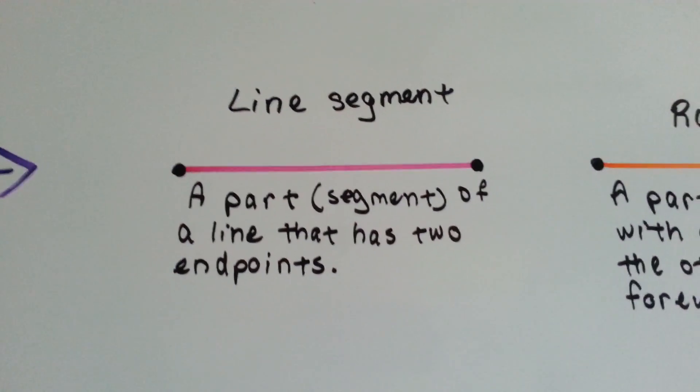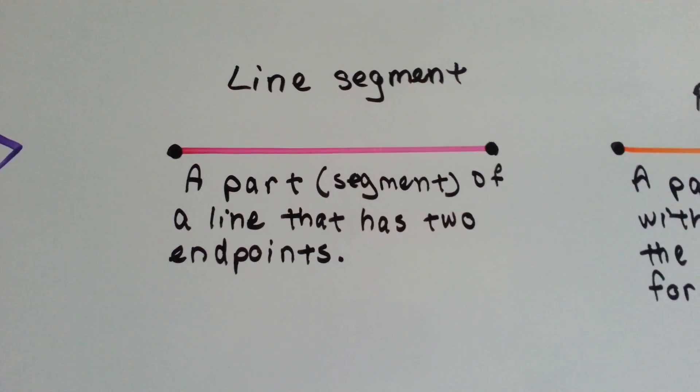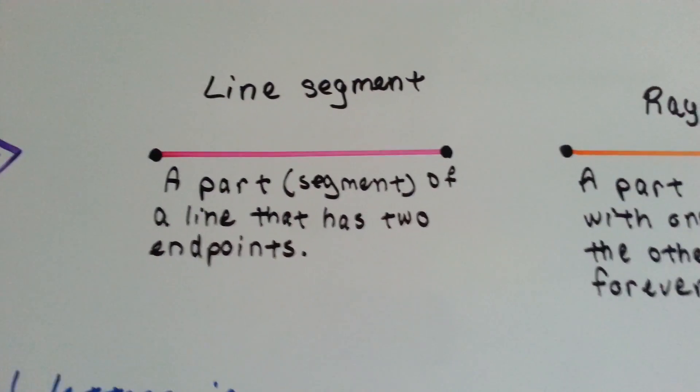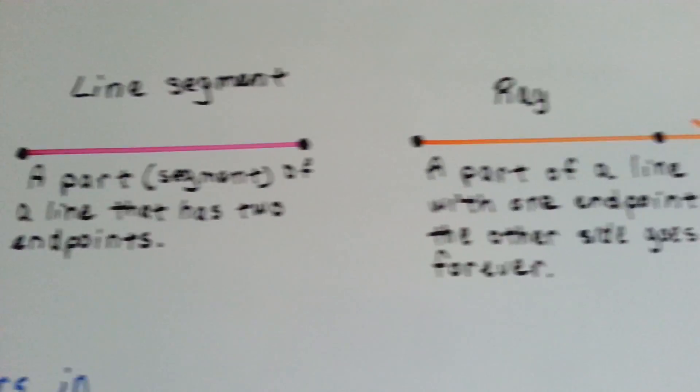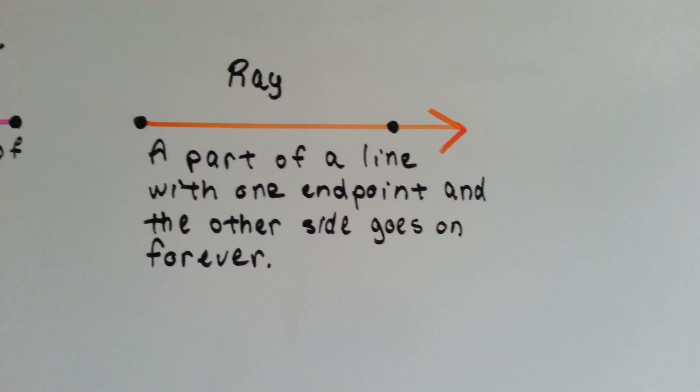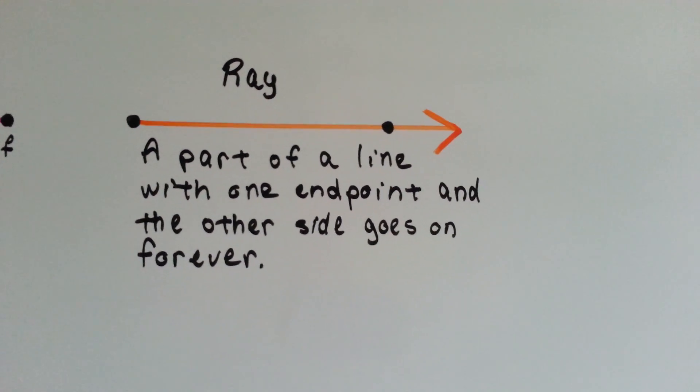A line segment is a part, it's a segment of a line, and it has two end points. It stops. It only goes that certain amount of distance. A ray is a part of a line with one end point on one side, and then the other side has the arrow point and goes on forever and ever.